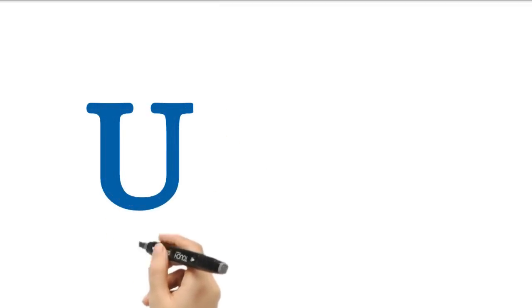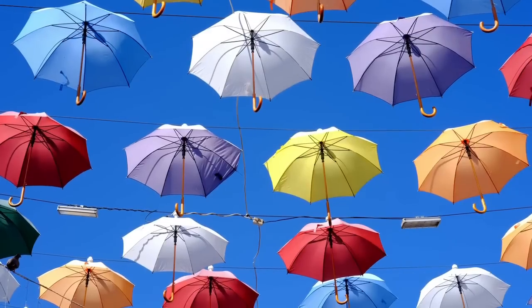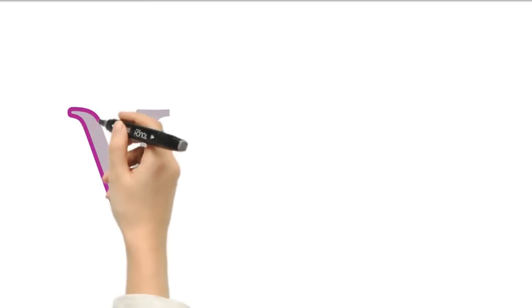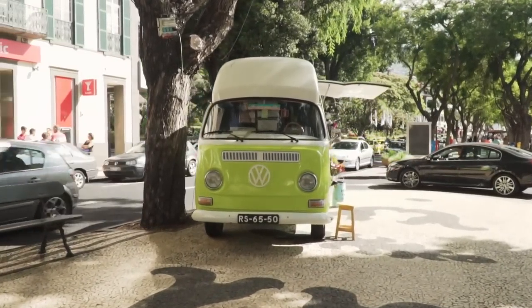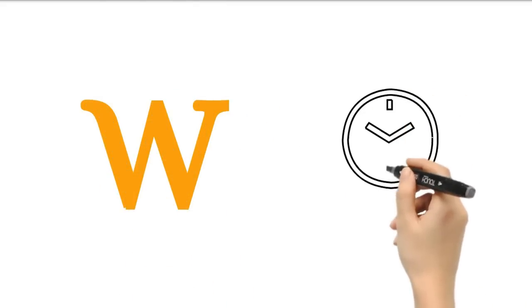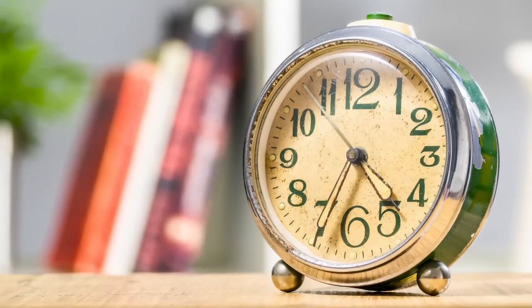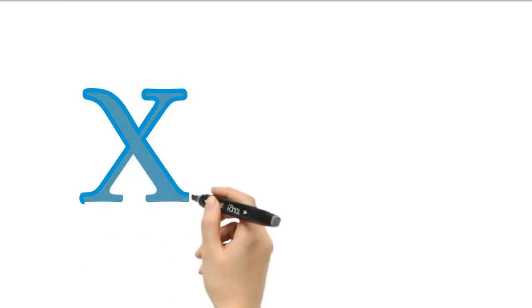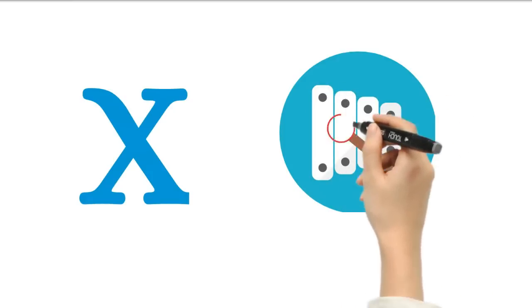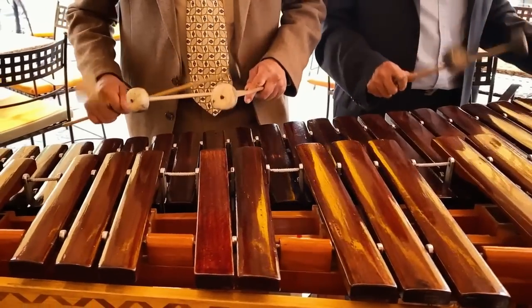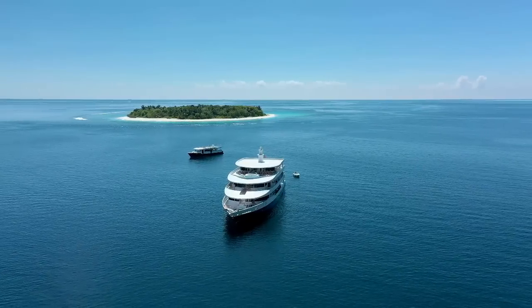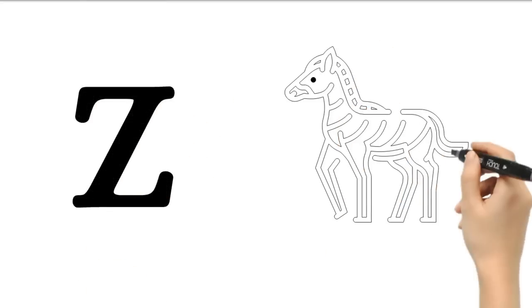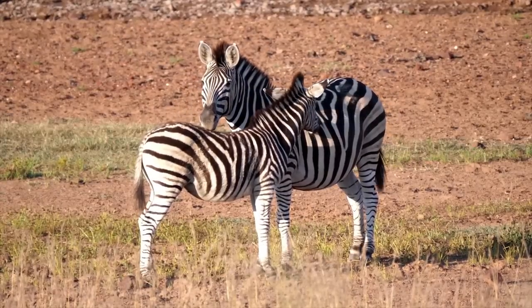U. U for umbrella. V. V for van. W. W for watch. X. X for xylophone. Y. Y for yak. Z. Z for zebra. Thank you.